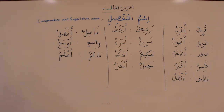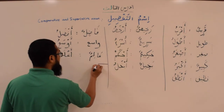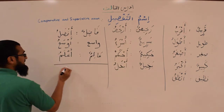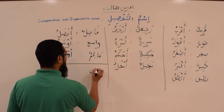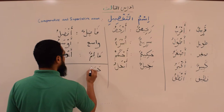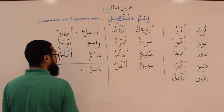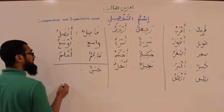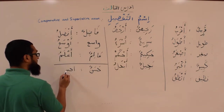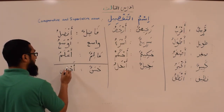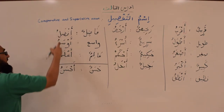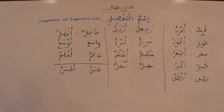It all depends on how you use it. You may see a word that's a bit unusual, like hasan, which means good — the ismu tafdeel is ahsanu, just like a'lamu.